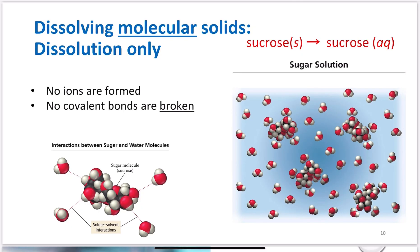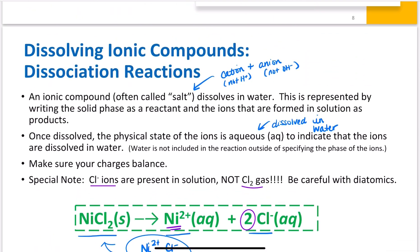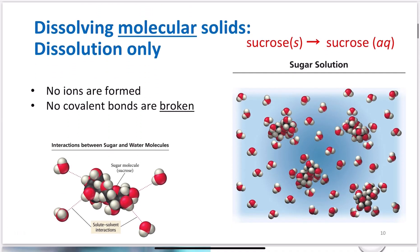And then dissolving molecular solids. This is a dissolution only. In the previous example, we're forming ions - that's an ionization process, meaning ions are being formed. Down here, it's only dissolving them. It's not forming any ions. So if I've got sucrose solid going to sucrose aqueous, no ions are formed, no covalent bonds are broken.